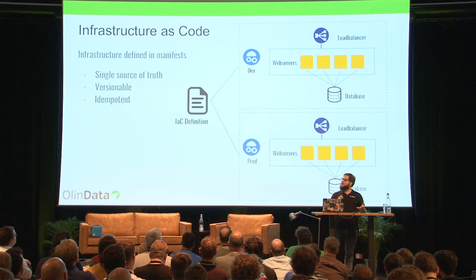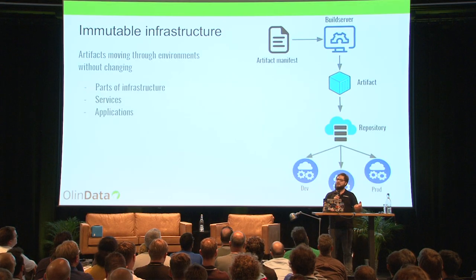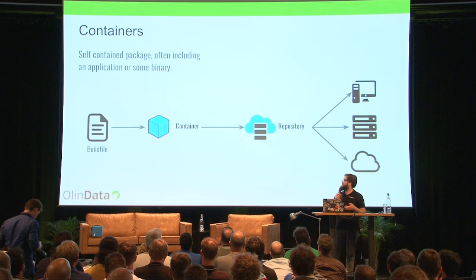The moment we start doing this, immutable infrastructure also becomes a really interesting concept. Because through a single change to a manifest file, you generate a completely new artifact. Instead of modifying machines, you end up replacing them, completely eliminating configuration drift.